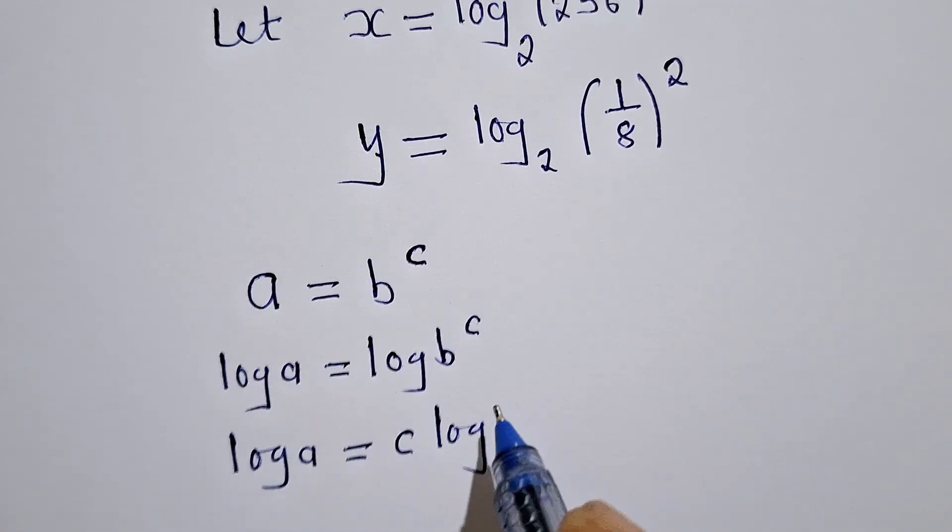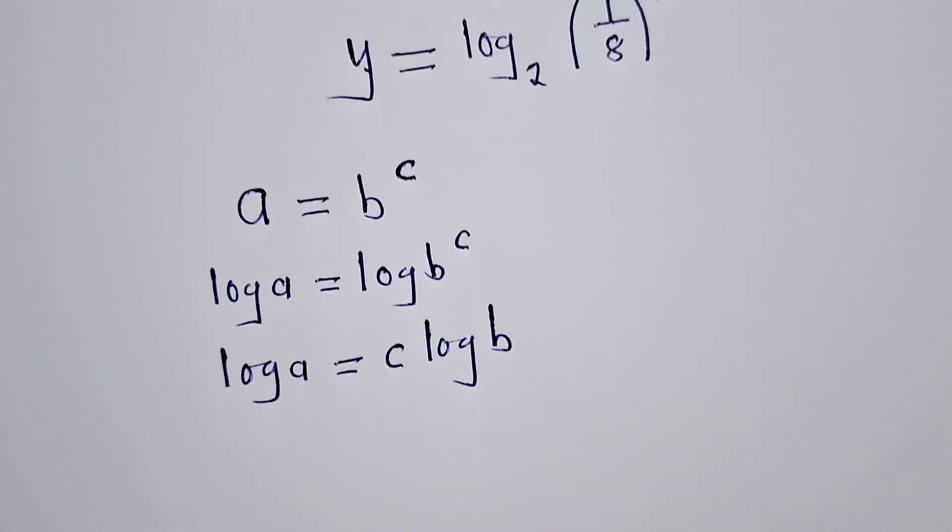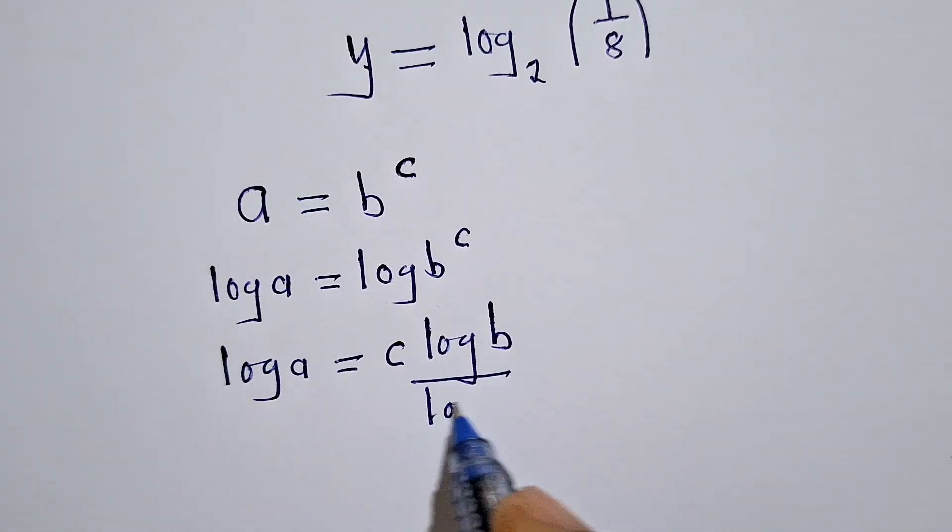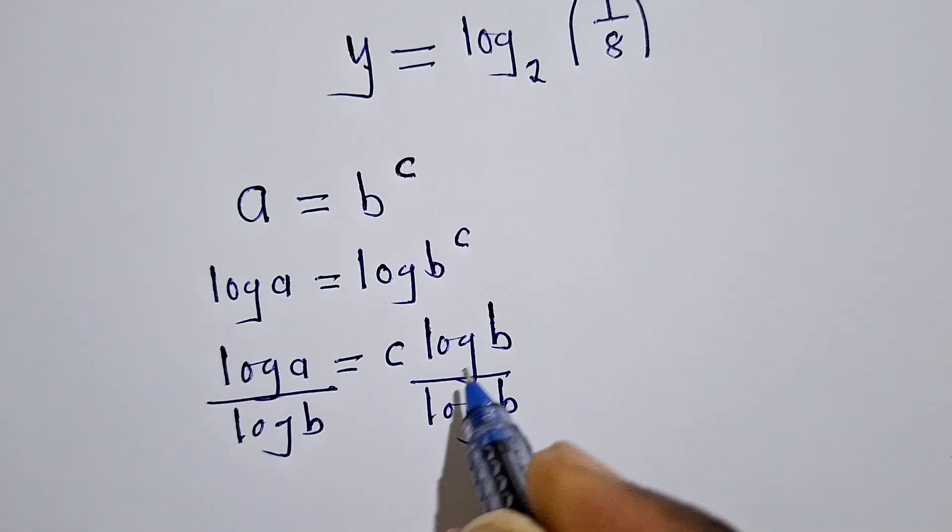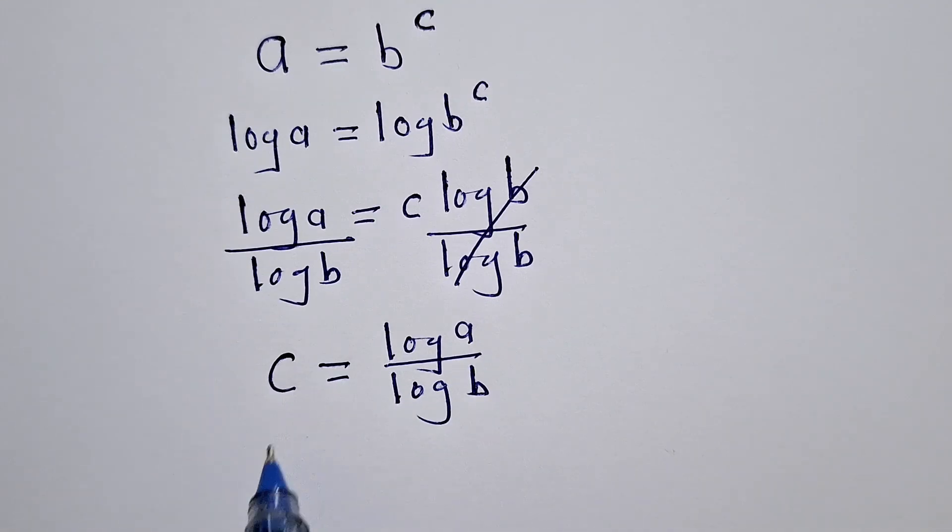We divide by log b, these two go. Therefore, we can say c is equal to log a over log b, and this can be written as log base b of a. Okay?